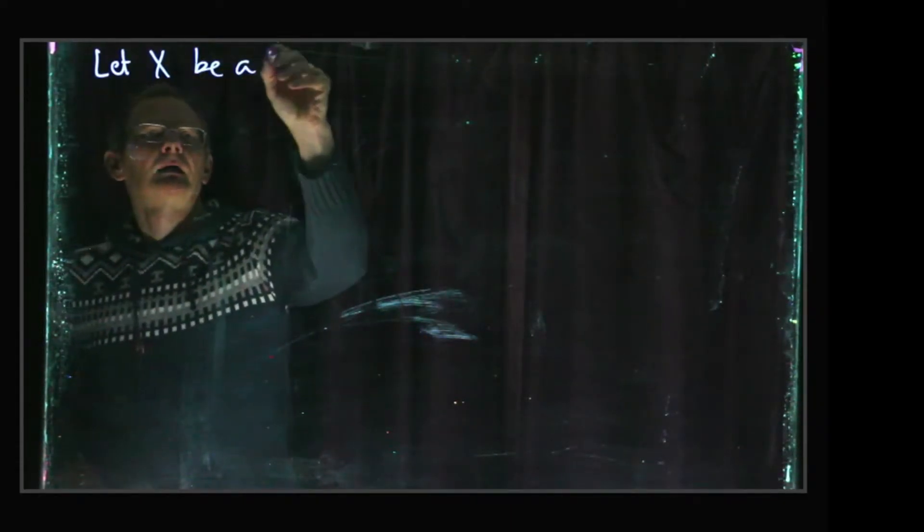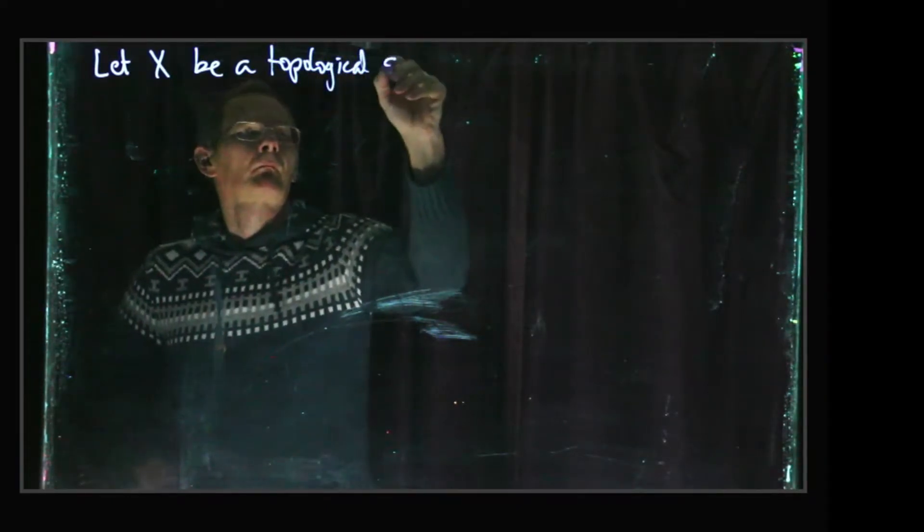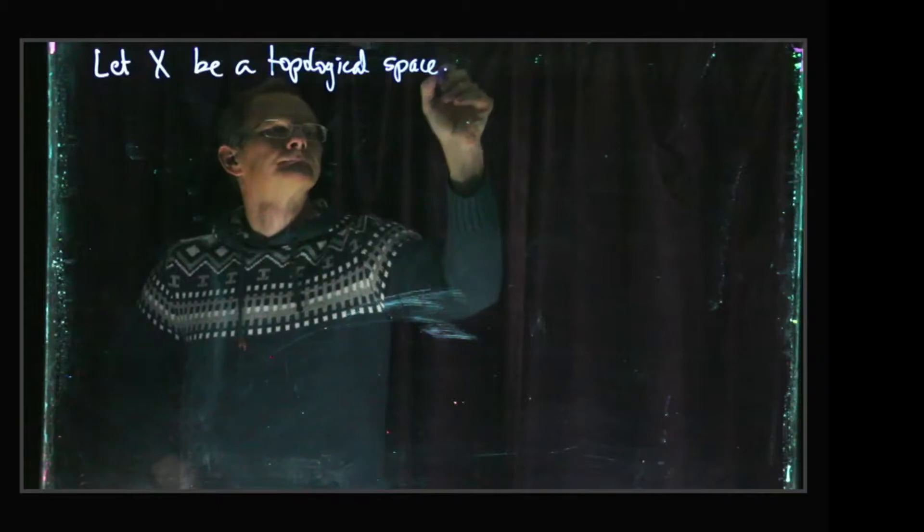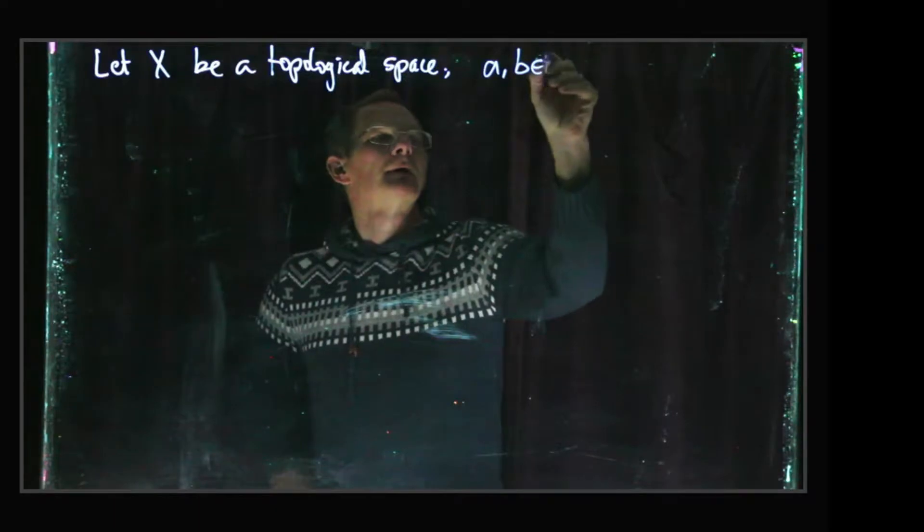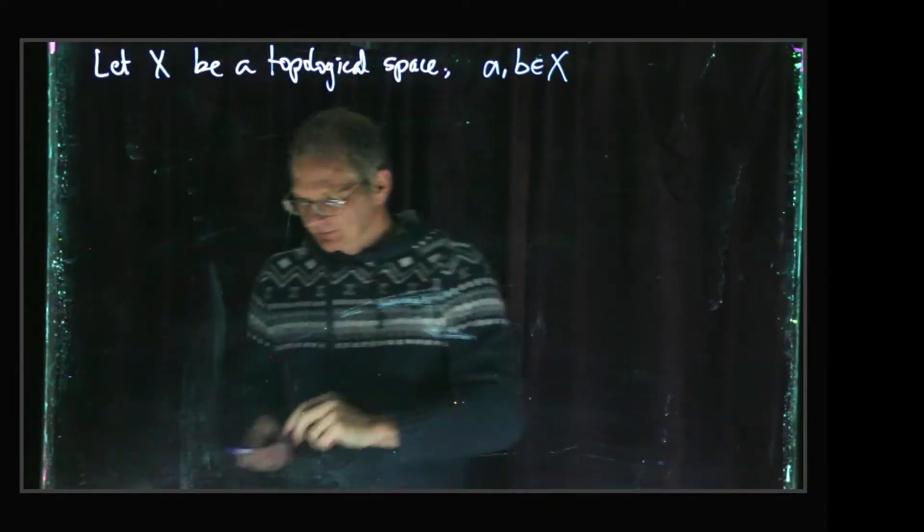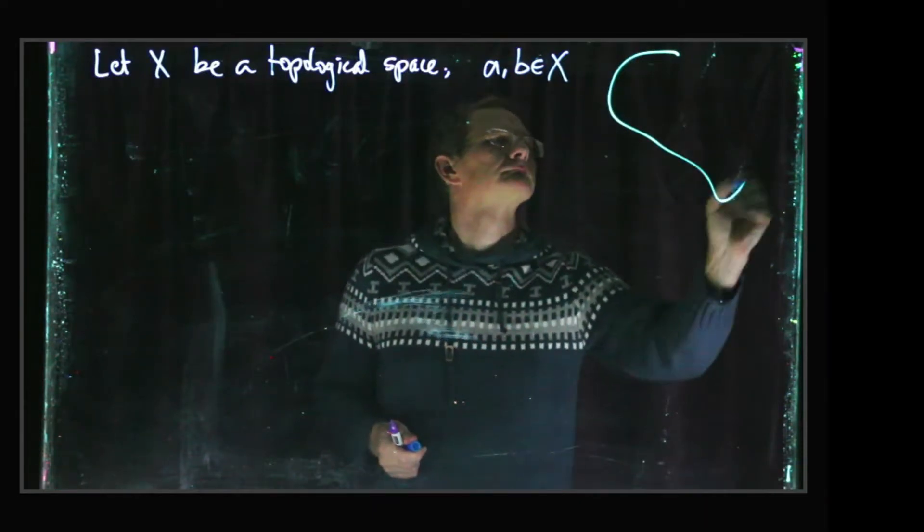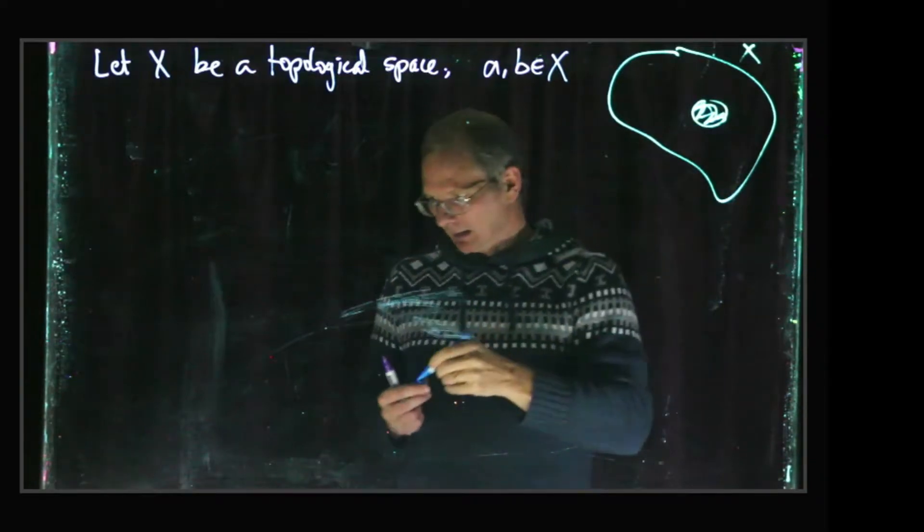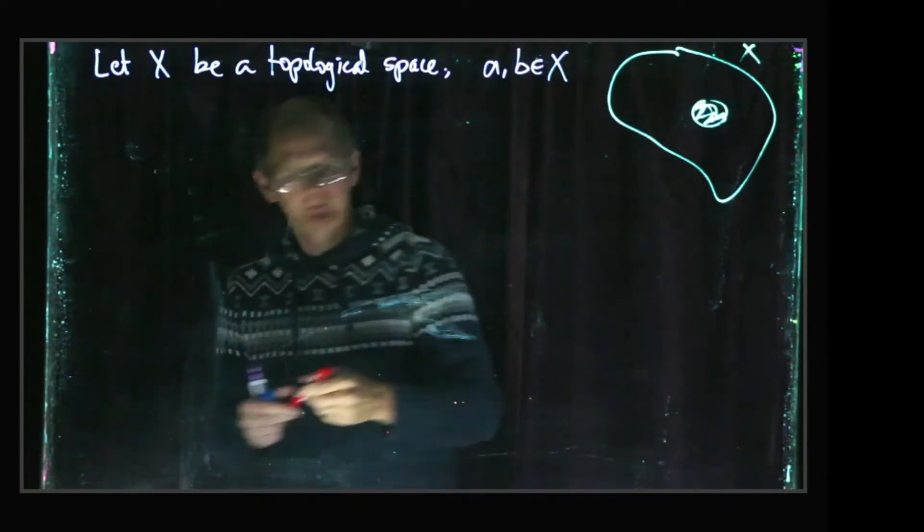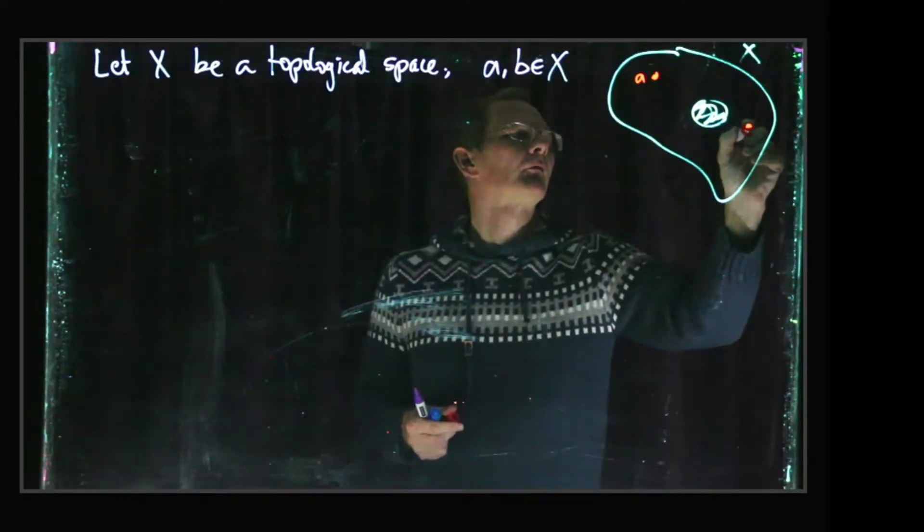So let X be a topological space. A and B are going to be points in X, so we might have this kind of picture here. Here's X, maybe it's got a hole in it here, and we've got some points. Here's our point A, here's our point B.